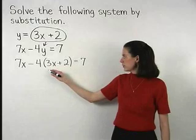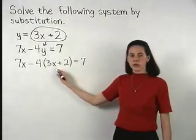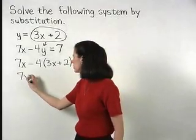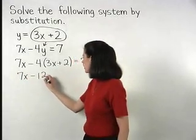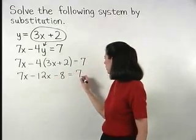Now we can solve for x by first distributing the negative 4 through the parentheses, to get 7x minus 12x minus 8 equals 7.